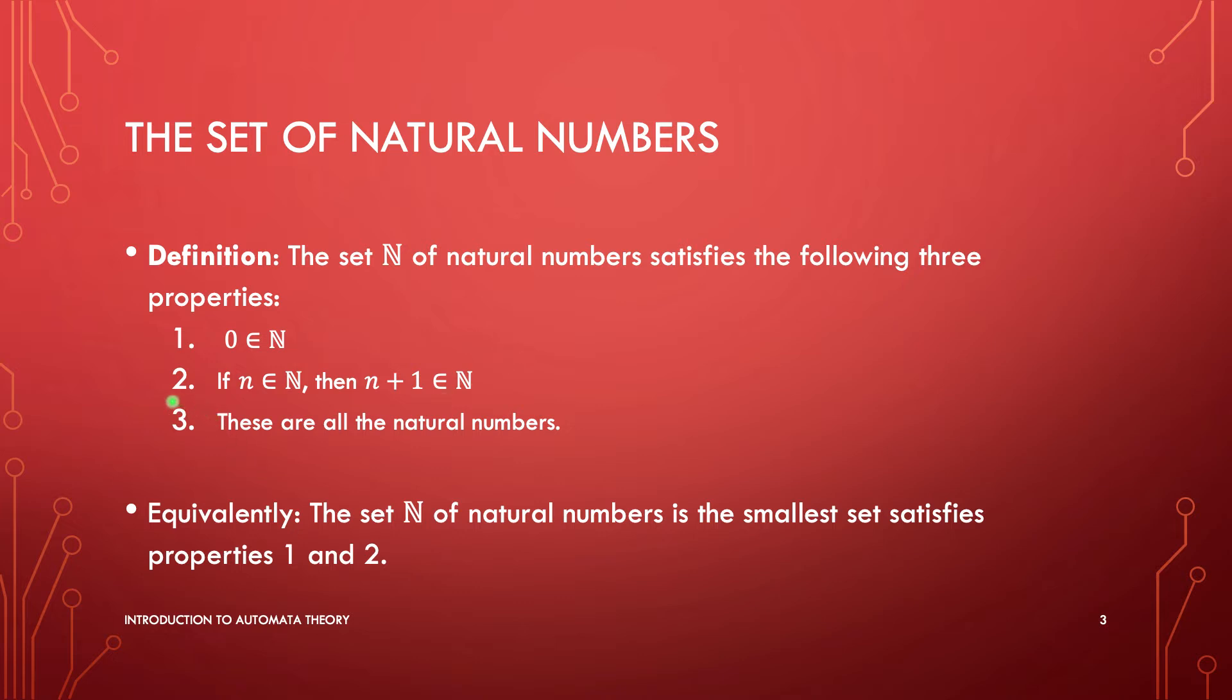Equivalently, regarding condition three, I can rephrase this: the set N of natural numbers is the smallest set satisfying properties one and two. This is another way of saying you can only introduce natural numbers through these rules. You start from zero and declare it to be a natural number. Then, if you already have a natural number, you also have the successor n plus one.